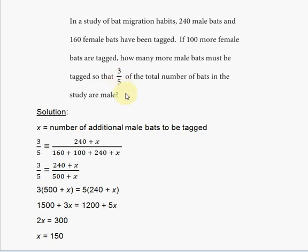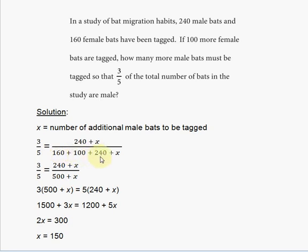So we set up: three-fifths equals the number of males after including the additional number, which is 240 plus X, over the total number of male and female bats after adding the additional males, which is 160 plus 100 plus 240 plus X.